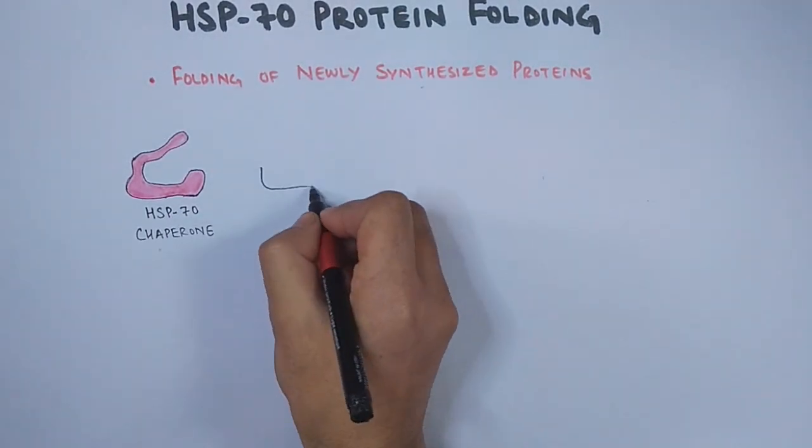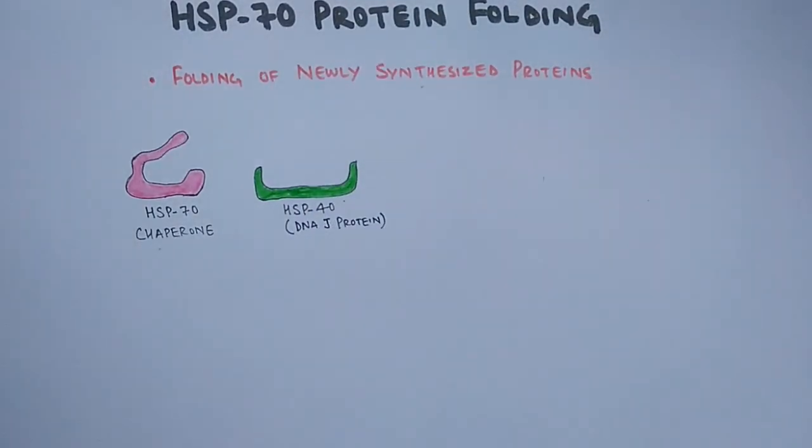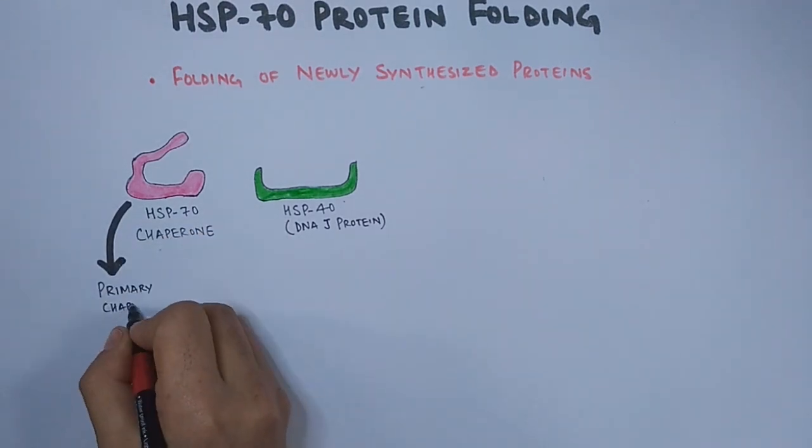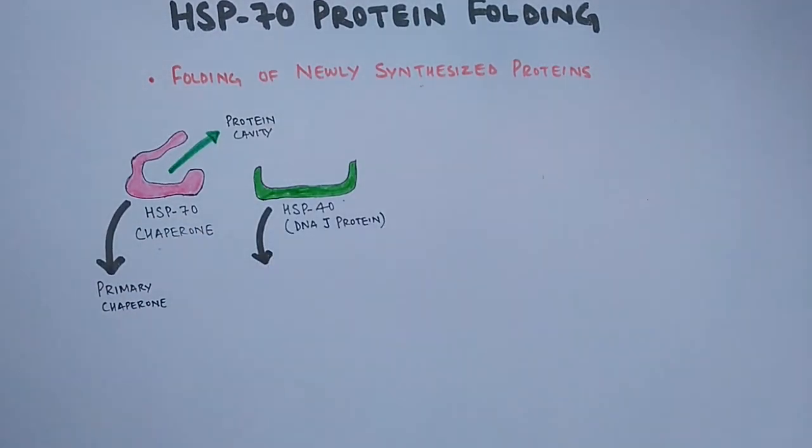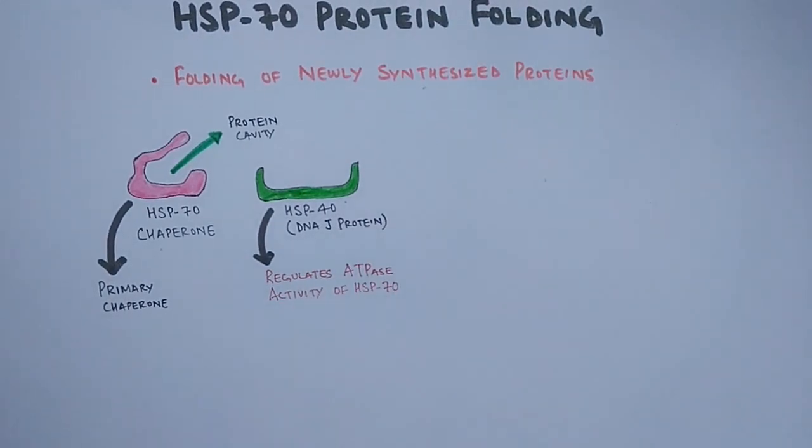Then we have another helper protein here called the HSP-40 or DNAJ protein, which is the co-chaperone for the HSP-70 system. This HSP-40 will aid in the protein folding for HSP-70. HSP-70 is the primary chaperone, while HSP-40 is the regulatory or co-chaperone which regulates the ATPase activity of HSP-70.